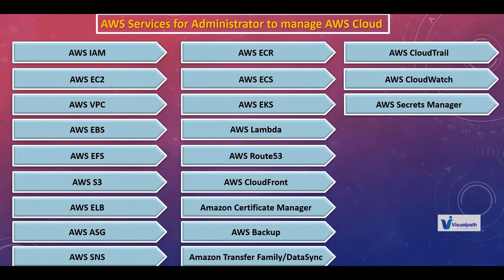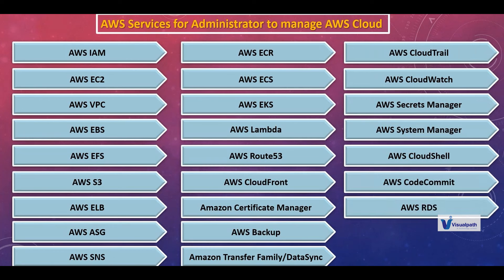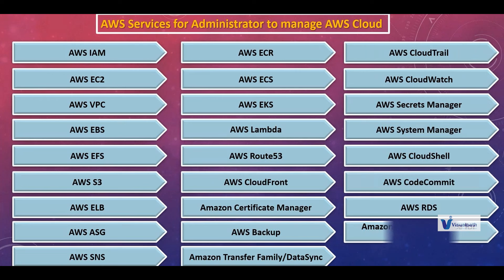Apart from that, we need to learn about Secrets Manager to store sensitive data in AWS. Then Systems Manager, which does similar things. Then CloudShell — if you want to interact with AWS and run commands to talk to it, we can use CloudShell. Then CodeCommit, which comes under Git. Then RDS — Relational Database Service. Then Prometheus, which comes under Kubernetes monitoring.